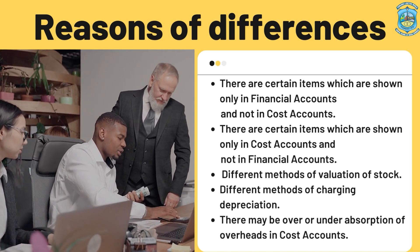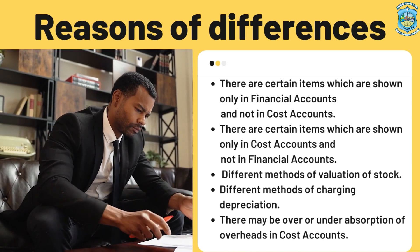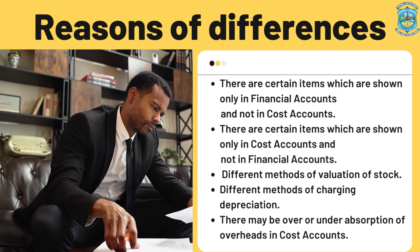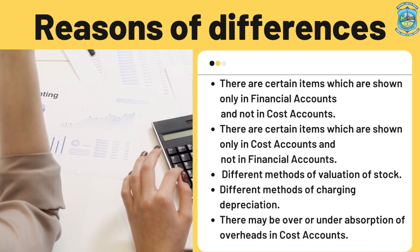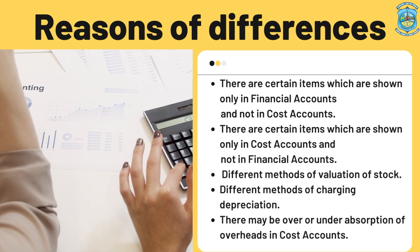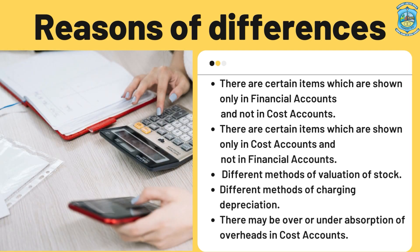Number four: different methods of charging depreciation. Both books may apply different methods of depreciation. There may be changes in the percentage and method of depreciation. The financial book may adopt the fixed installment method or the reducing balance method, whereas the cost book may charge a different depreciation. There is also over and under absorption of overheads in cost accounting. These are the basic reasons why differences arise between both books.